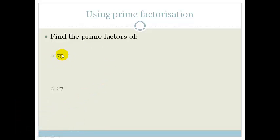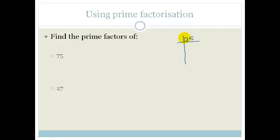Let's look at 75. The way we do this is we find the smallest prime number that can go into 75. The smallest prime number that goes into 75 is 5.